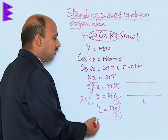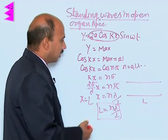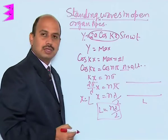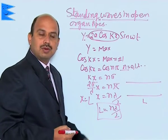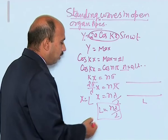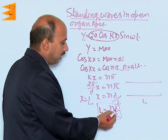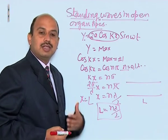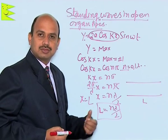So now, for all these values like 0, 1, 2, 3, the amplitude is maximum. Now we can take L equals nλ/2 and we can study different normal modes of vibration.